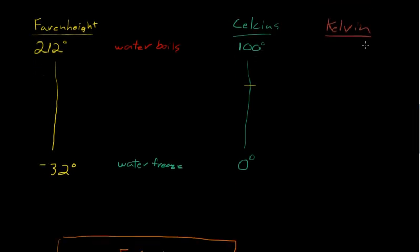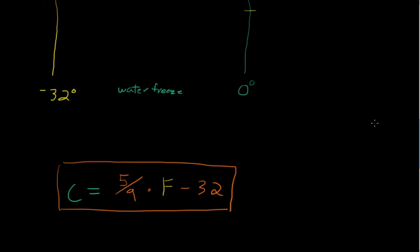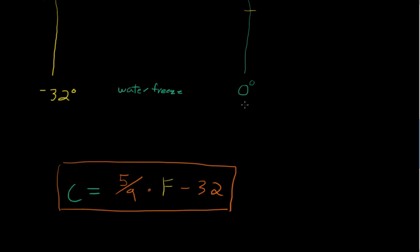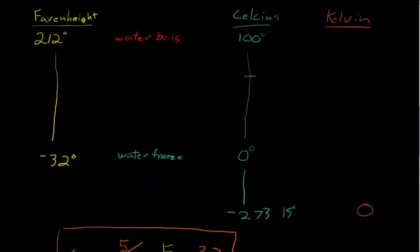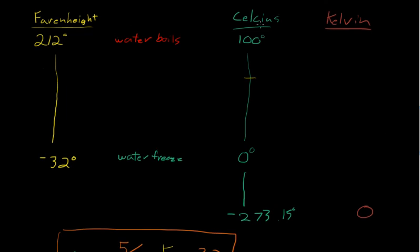It's the coldest possible temperature you can ever reach. You can't get colder than minus 273.15 Celsius. The way that Kelvin makes that easier is if you're working with minus 273.15 Celsius, that equates to zero Kelvin. It's the same scale as Celsius. So water boils at 373.15 Kelvin - you add 273 to the Celsius value.